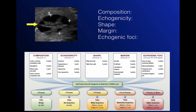This nodule here is not solid — it's mixed cystic and solid, so it receives 1 point for composition. Echogenicity is determined from the solid component and it is isoechoic, so 1 point. For shape, margin, and echogenic foci it receives zero points, making this a 2-point nodule: a TIRADS 2. This does not get FNA or follow-up regardless of size.